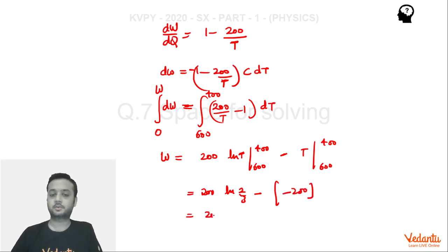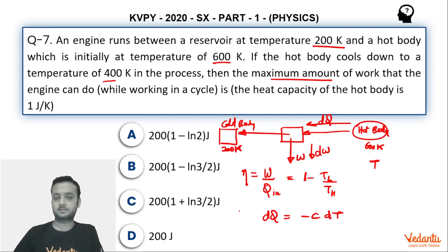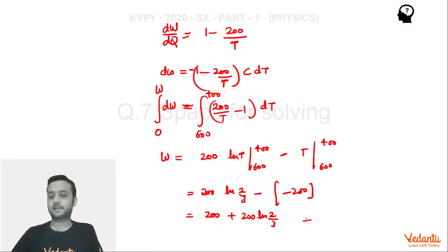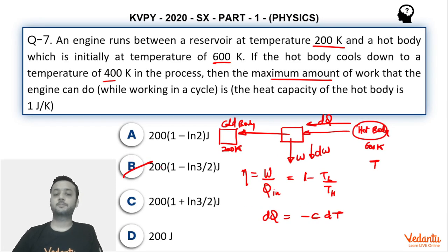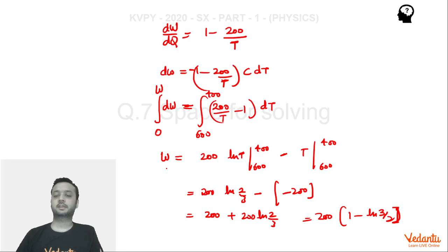So this becomes 200 plus 200 ln of 2 by 3. So option B is the correct answer. You can write this as 200 times 1 minus ln of 3 by 2 using the property of logarithm. Option B will be the correct answer for this question. Definitely a very nice question. I hope you would have understood. That's it, thank you.